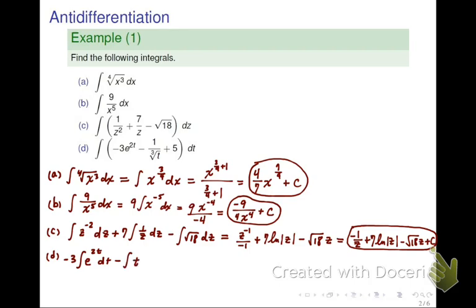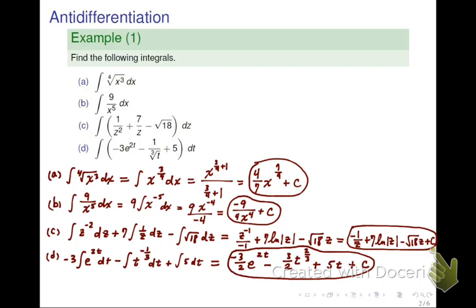That can be rewritten as integral of t raised to the negative 1 third because it's actually in a denominator. So you get negative 1 third for the power. And for the third part, it's just a constant integral of 5 dt.